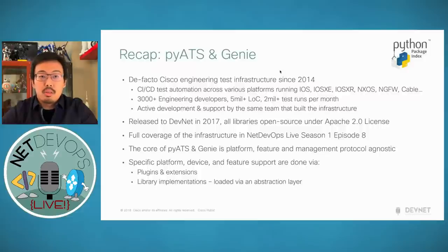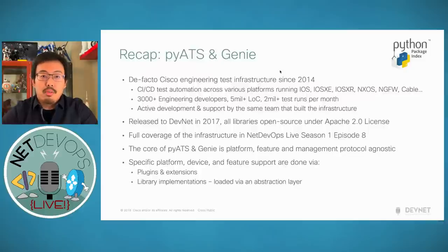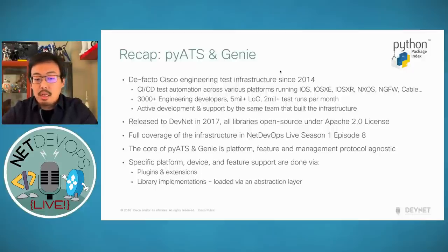The same team developing the infrastructure is also helping you out when you reach out to PyATS support — you're directly reaching developer to developer. We built this whole set of libraries that we find great for driving network devices and various features. This whole thing was released to DevNet in 2017, so for the last two years all of the libraries have been open source under the Apache license. You can get to it immediately on github.com/cisco-test-automation. Full coverage of this infrastructure was in NetDevOps Live season one, episode eight.